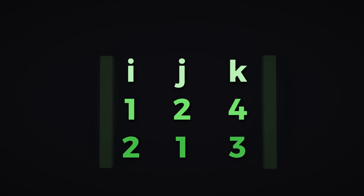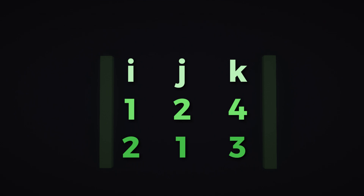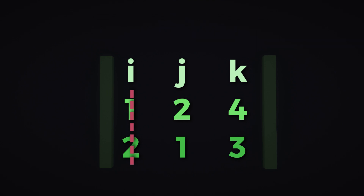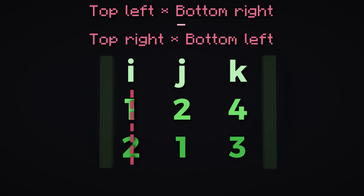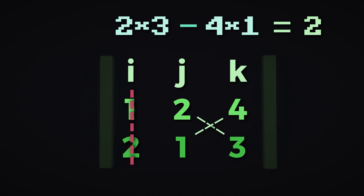Now we start calculations — you're going to calculate them each letter at a time, so let's start with I. To calculate for I, ignore the column with I and cross the other two columns: top left times the bottom right, subtracted by top right times the bottom left. That's why it's called crossing — it makes an X formation. For our example, we ignore the I column and do 2 times 3 minus 4 times 1, which equals 2. So we get 2I, our X direction unit vector.